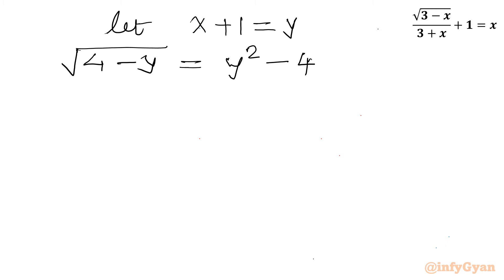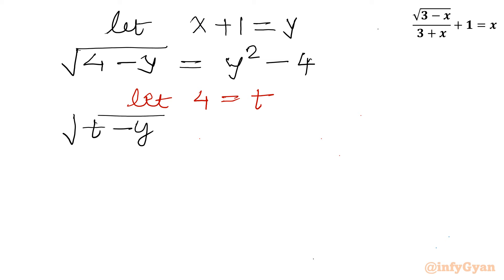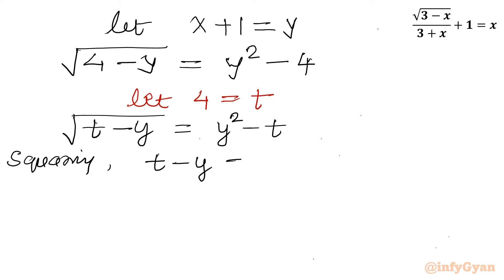Now it is time for a second substitution. Let 4 equal t. The equation becomes: square root of (t minus y) equals y squared minus t. Considering squaring both sides, we get: t minus y on the left-hand side equals (y squared minus t) whole squared, which expands to y to the power 4, plus t squared, minus 2y squared times t.